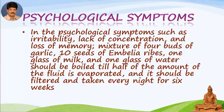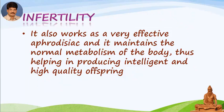For psychological symptoms such as irritability, lack of concentration, and loss of memory, a mixture of four buds of garlic, ten seeds of Indian gooseberry (amla), one glass of milk, and one glass of water should be boiled till half the fluid is evaporated, then filtered and taken every night for six weeks.